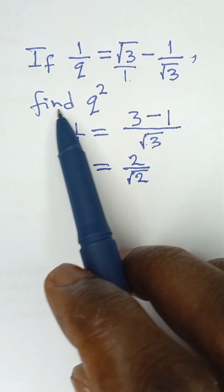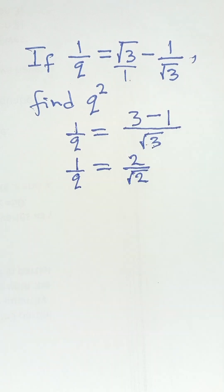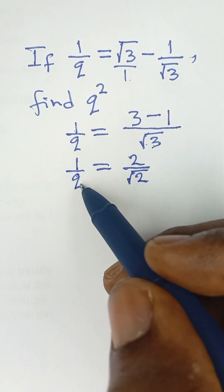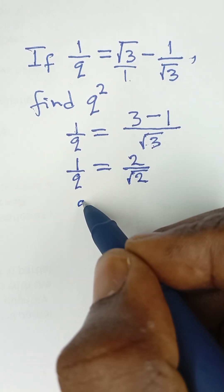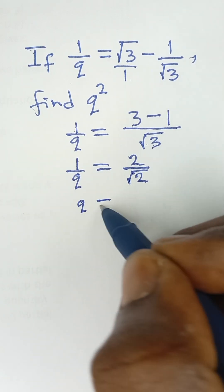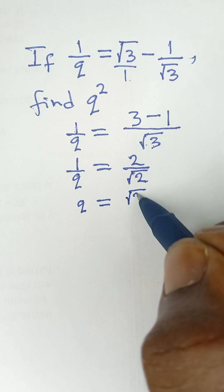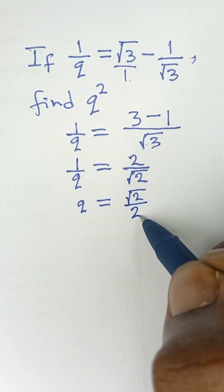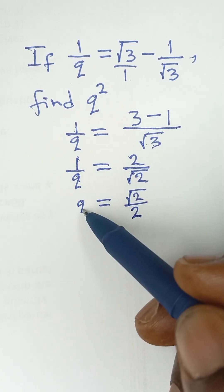But the equation says we should find Q squared. So if this is 1 over Q, then Q over 1, which is the inverse of this, will simply be root 2 goes up to over 2. So 1 over Q is Q.